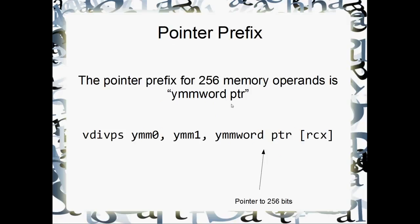The pointer prefix for a 256-bit pointer is YMMWORDPTR. So something like VDIVPS - that's divide packed singles for AVX - with YMM0, YMM1, followed by YMMWORDPTR and whatever register you're pointing with.